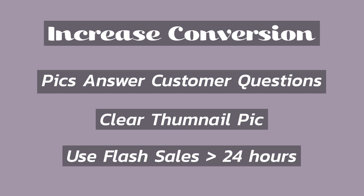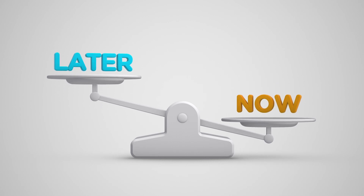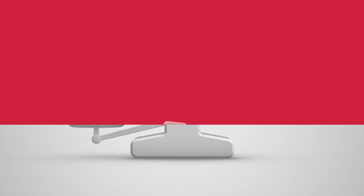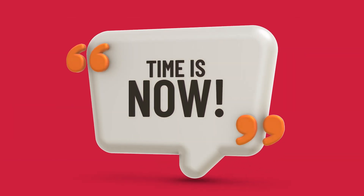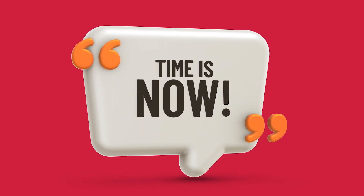The next tip is to use flash sales, and these flash sales should be under 24 hours, because this allows Etsy to put a countdown timer on your products and gives a sense of urgency. It encourages the customer to buy now. If the sale was a few days long they might say they'll come back later, favorite it, and nine times out of ten they're not going to come back. The countdown timer pushes them to act immediately.